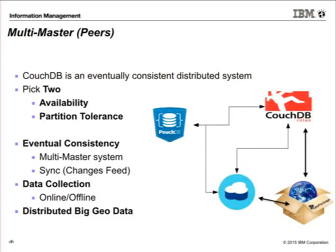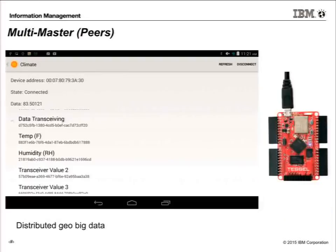So how do we handle big data? We don't have a single Oracle or Postgres server. We say your big geo data is distributed. There's also a demo example: a Tesla board on the right and an Android client on the left. I'm currently offline, receiving temperature and humidity in this room and writing offline to my tablet. I come back online, my Android device is a master, and I'm going to sync that data up into the cloud and across east, west, and into Europe. This is distributed big geo data.